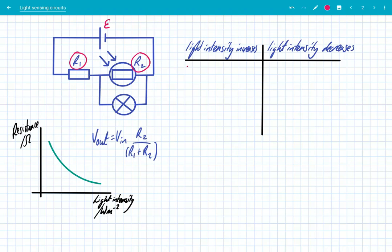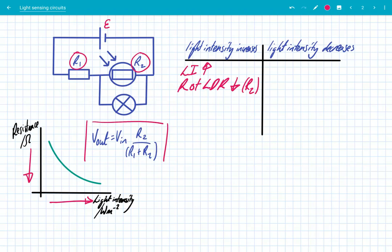Let's say the light intensity increases. Looking at our graph, when we increase the light intensity, the resistance decreases. So the resistance of the LDR also decreases — R2 has gone down. If R2 goes down, looking at the equation, Vout will also go down. So Vout, which is across R2, will decrease. That means the bulb gets less power and therefore gets dimmer.